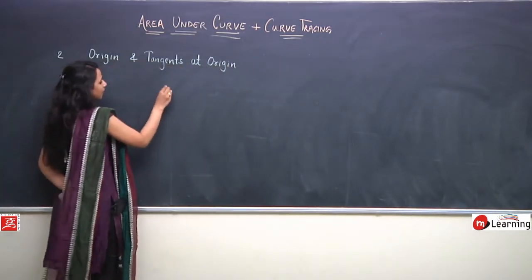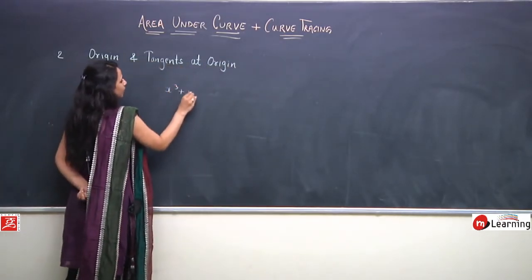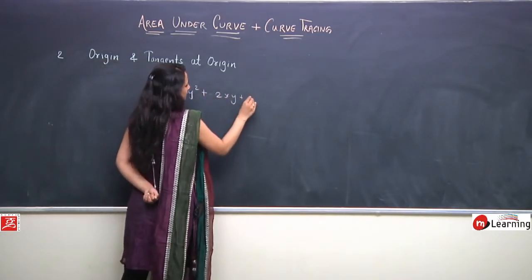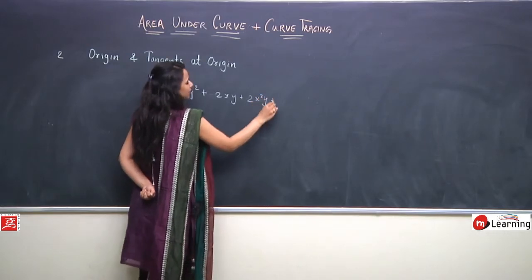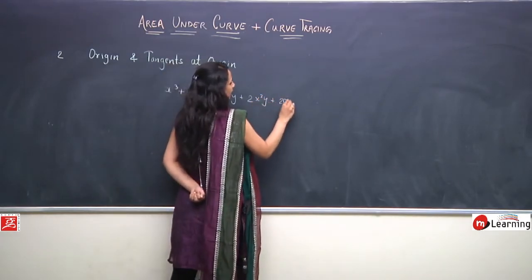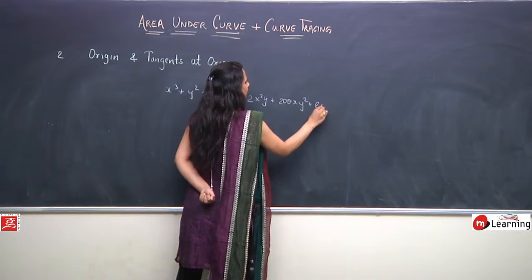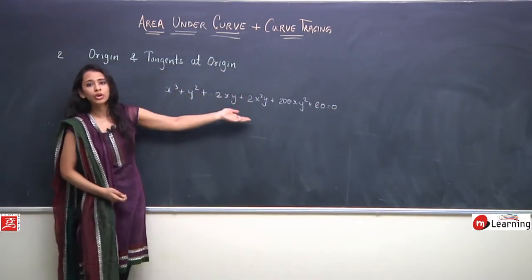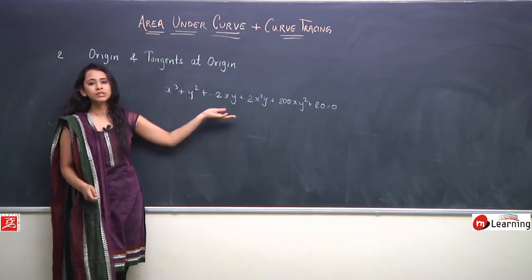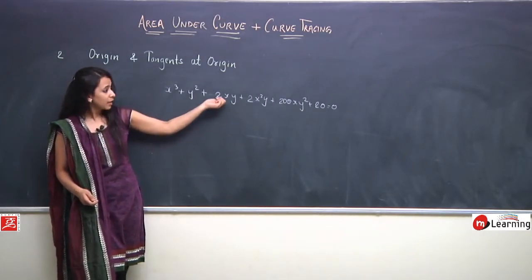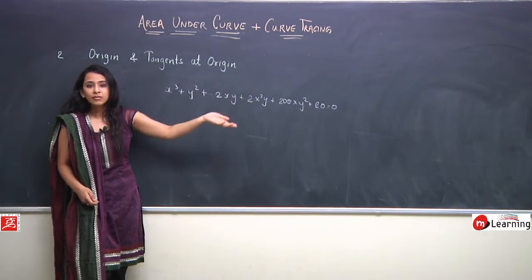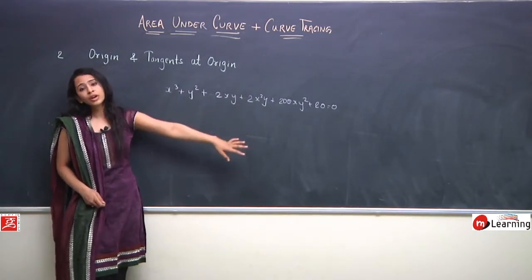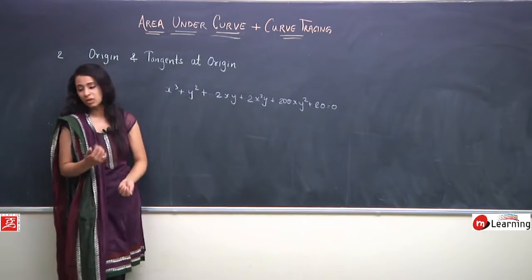For example, if we have an equation of a curve of the form x³ + y² + 2xy + 2x²y + 200xy² + 20 = 0, to know whether this curve passes through origin, we put (0,0) in the equation. We get 20, which is not equal to 0, which means the curve does not pass through origin.